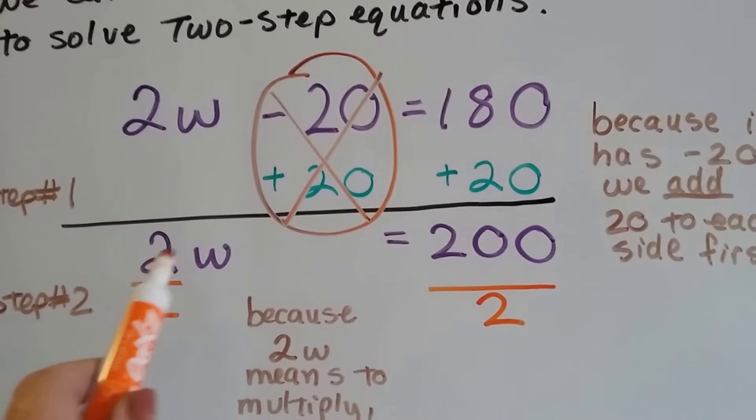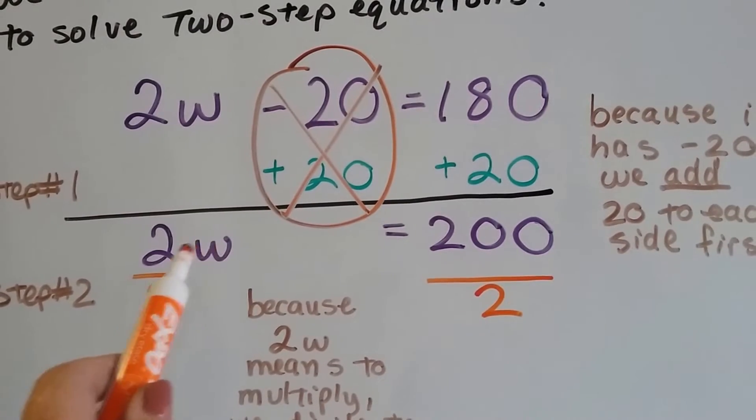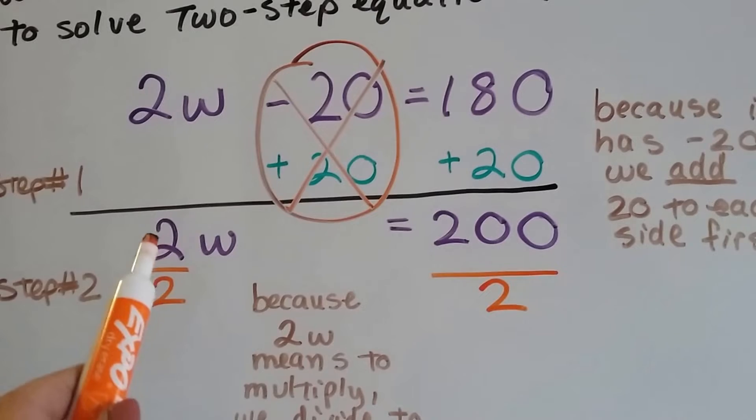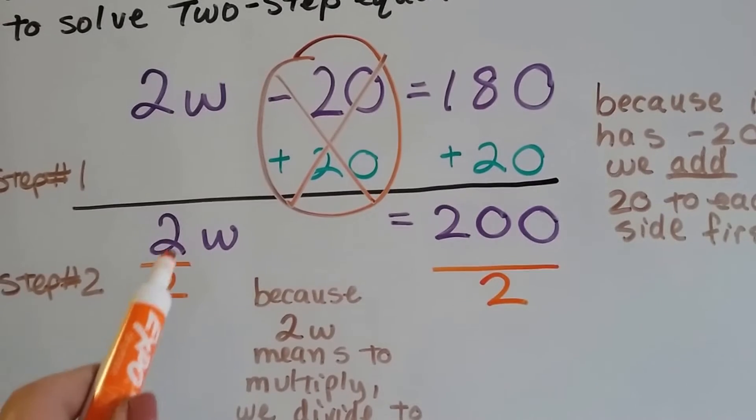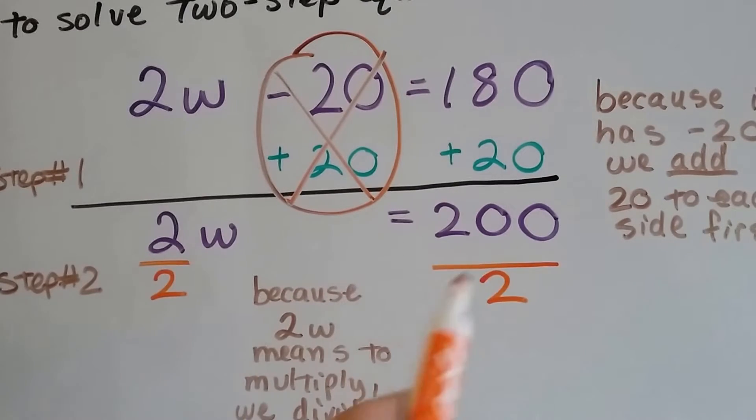Well, because 2w means to multiply 2 times w, the inverse operation to get rid of this 2 would be to divide. So we're going to divide both sides by this 2.